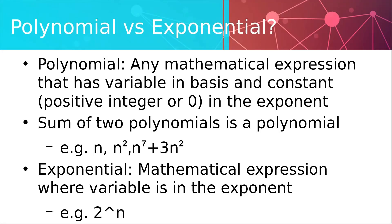So, for example, n to the seventh plus 3n squared is a polynomial. Since n squared is a polynomial, n squared plus n squared plus n squared is still a polynomial. And n to the seventh is polynomial. And if we sum all that, we just get a polynomial. Exponential is a mathematical expression where the variable is in the exponent. For example, 2 to the power of n.